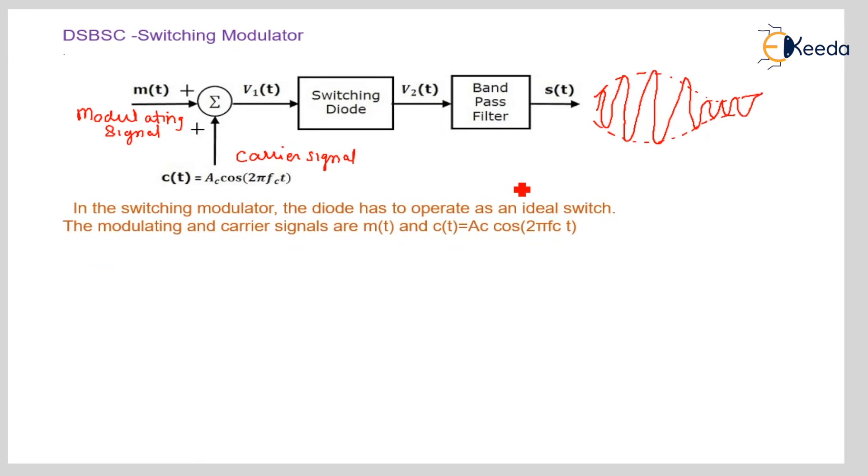So let us see the operation. The switching modulator diode has to operate as an ideal switch. Modulating signal is simply M of T here. But the carrier signal is C of T equal to AC cos of 2 pi fc t.